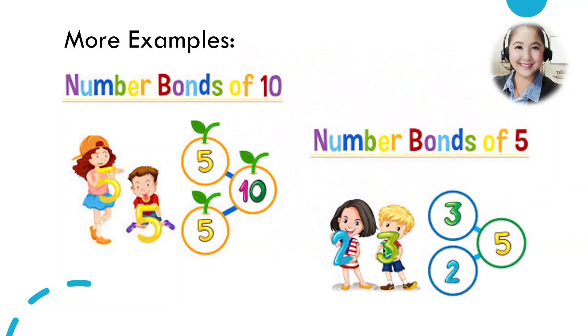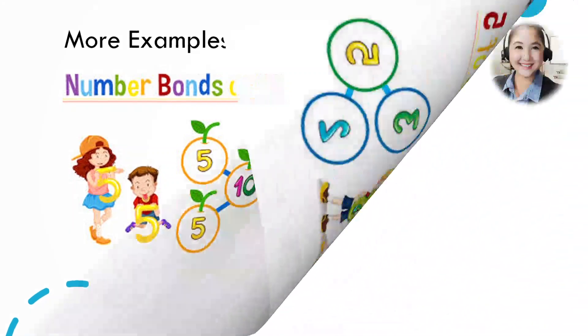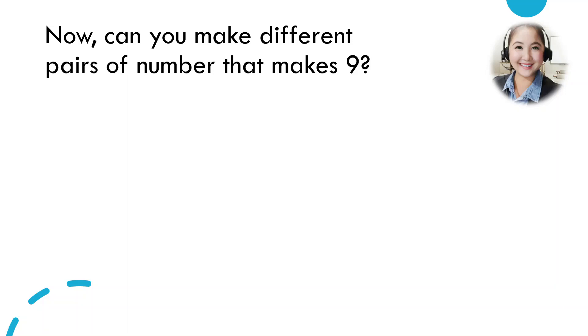This time, this is a number bond of five. Three and two makes five. All right, let's move on to the next level. Let me see if you can make different pairs of numbers that make nine. Can you help me?